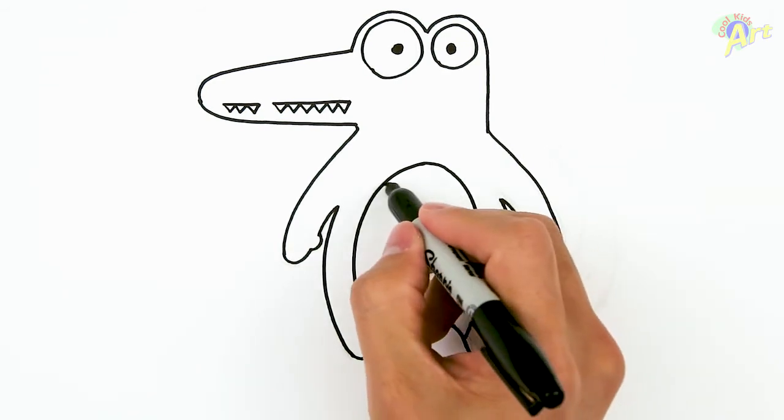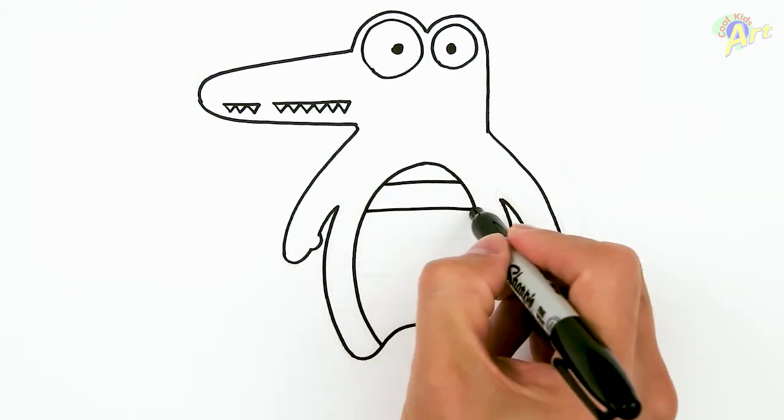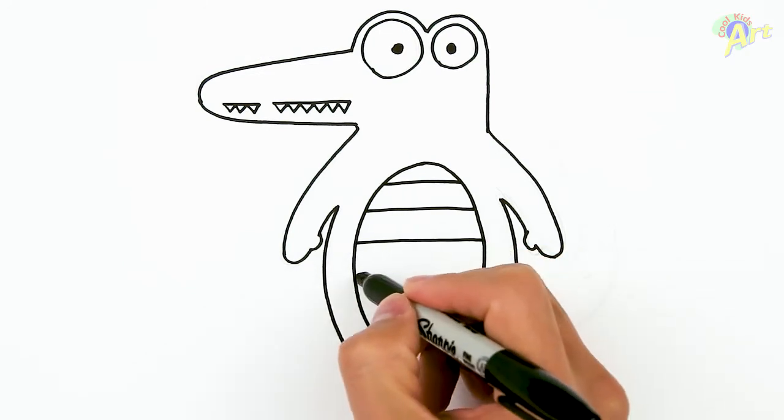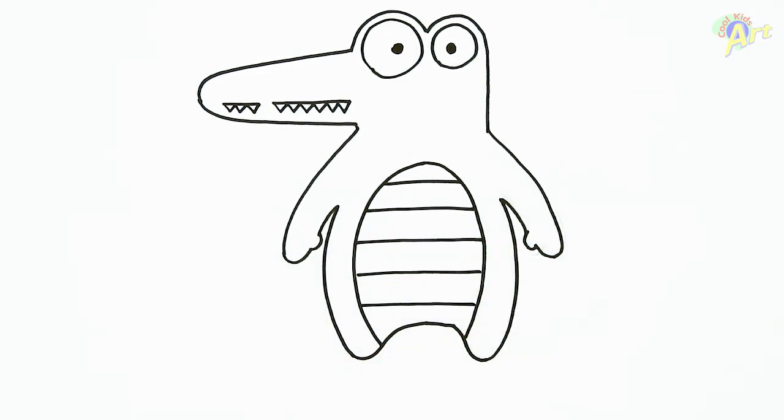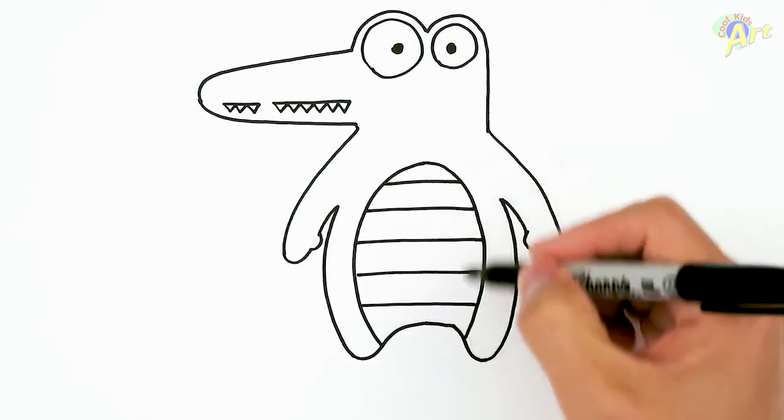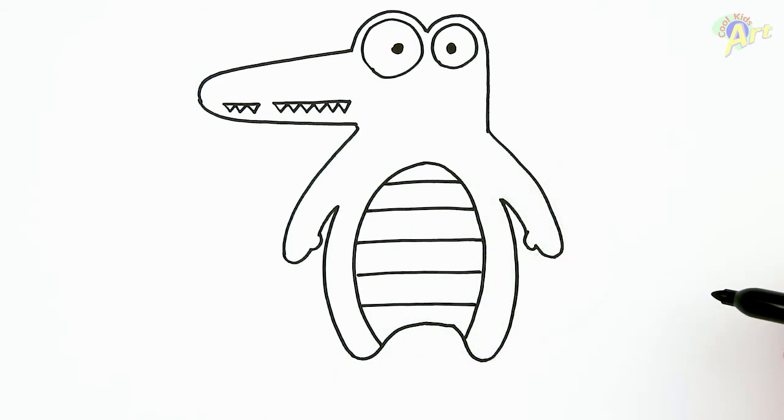And now we're going to give it some lines. One, two, three, four, five. And you can do more if you want. It's just however many lines you need to go all the way down.